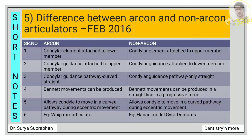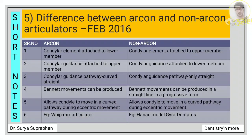Next are differences between arcon and non-arcon articulators — six differences. In arcon articulators, the condylar element is attached to the lower member, condylar guidance is attached to the upper member, the condylar guidance pathway is curved as well as straight, Bennett movements can be produced, and it allows the condyle to move in a curved pathway during eccentric movement. An example is the Whip-Mix articulator.